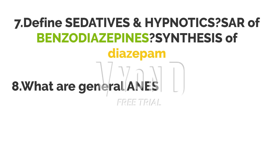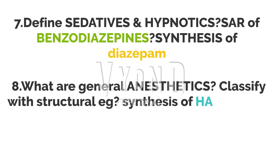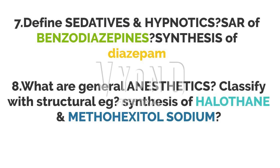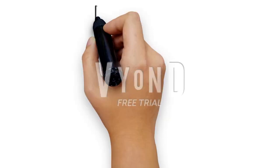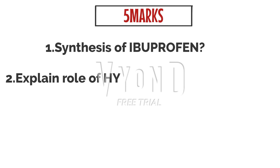Eighth question: What are general anesthetics? Classify with structural examples — structure is very important — then write the synthesis of halothane and methohexital sodium. For 5-mark questions, the first one is the synthesis of ibuprofen.